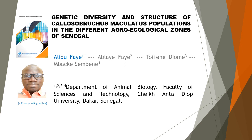Genetic Diversity and Structure of Callosobruchus maculatus Populations in the Different Agro-Ecological Zones of Senegal. This article is written by four authors: first author Alio Fay, second author Ablaia Fay, third author Tof Ndiome, and last author Mbaksen Ben.